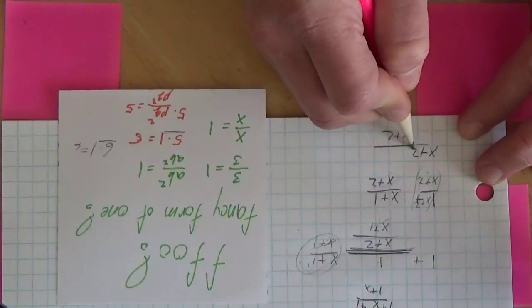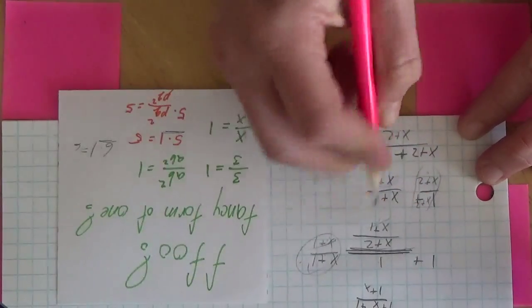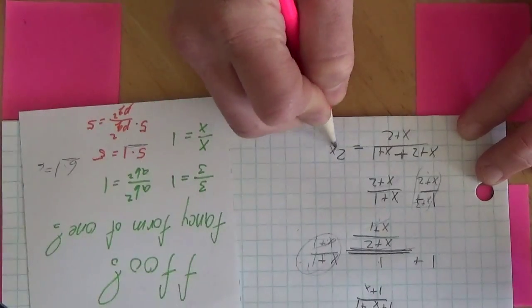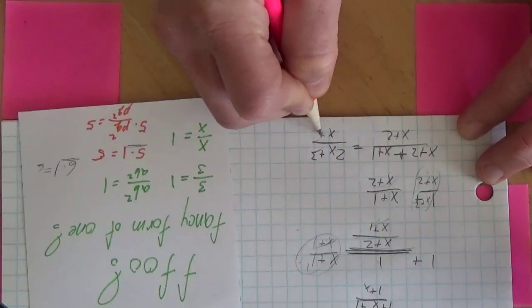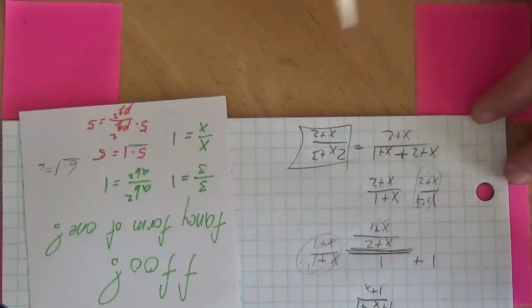So this is going to be x plus 2, and then the middle sign was a plus. Sorry, it's getting a little messy. x plus 1, and so I'm going to have 2x plus 3 over x plus 2. I look to see if there's any simplification. Nope, that's as good as it gets.